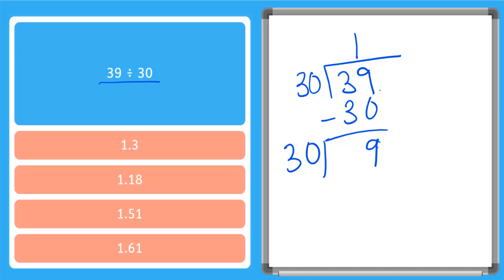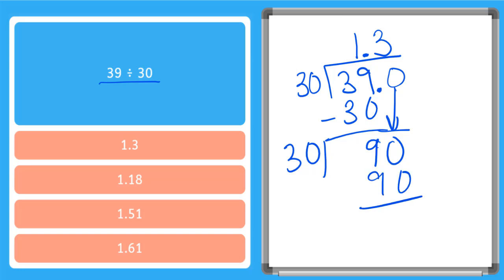So it's time to add our decimal point and put a 0 behind our 39. When we put our decimal point in the dividend we bring it up to our answer, and then we bring this 0 down to give us a bigger number. Now we're saying how many times does 30 go into 90? 30 times 3 is equal to 90, so we put our 3 up here. 3 times 30 is 90, which gives us 0. Our total answer is 1.3.